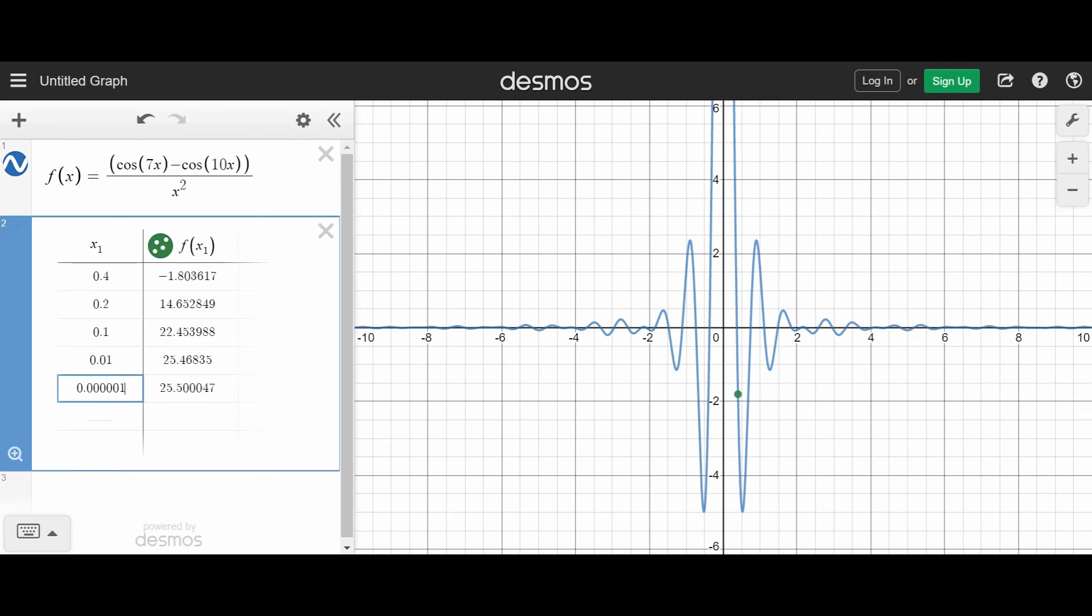And you can start to see a pattern in the numbers. So when I'm far away from 0, I don't get very close to anything, but you can see as I get closer and closer to 0, my values appear to be approaching a particular value. You can see that those values seem to be getting closer and closer to 25.5 something. And those are the ideas that you want to be following in this early section, sections of Unit 2.